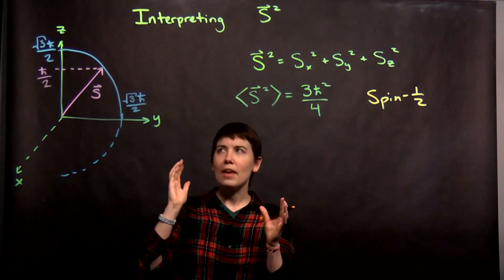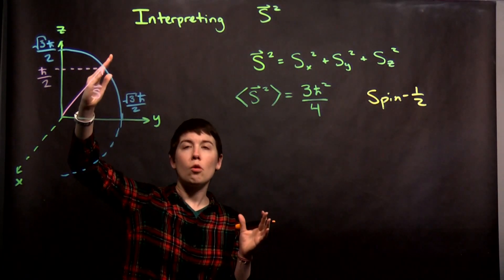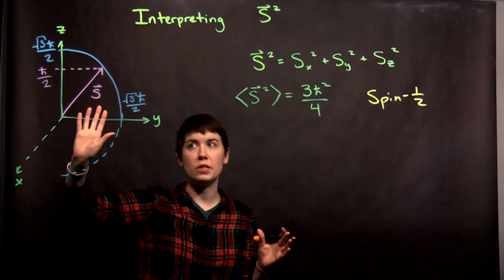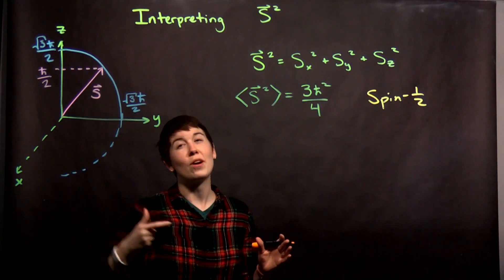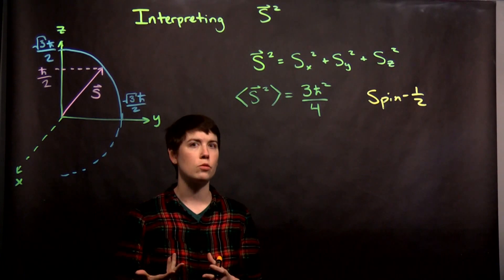But we can't imagine our orientation being exactly determined or else we would then know what x, y, and z all are and those don't commute.